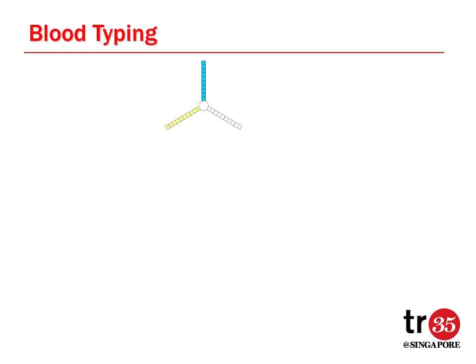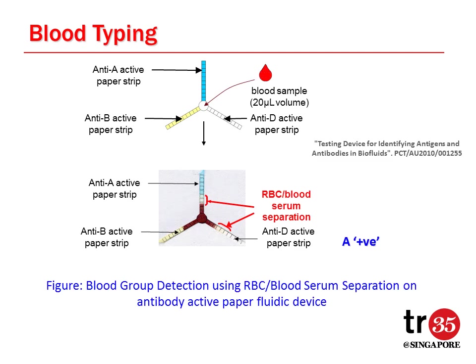We also designed a three-arm paper fluidic device for on-the-spot single-drop detection of an unknown blood group. We treated three arms with three different antibodies A, B, and D. We then deposited a single drop of blood sample at the middle of the paper diagnostics. We found chromatographic separation on antibody A and D treated strips, which means the blood has antigen A and D. Therefore, it is A positive blood.